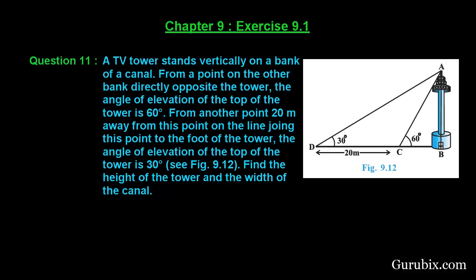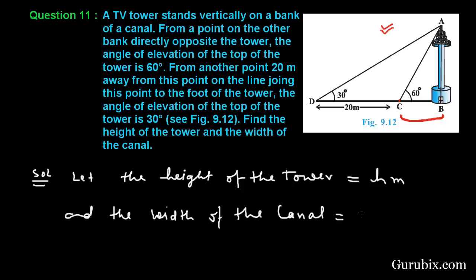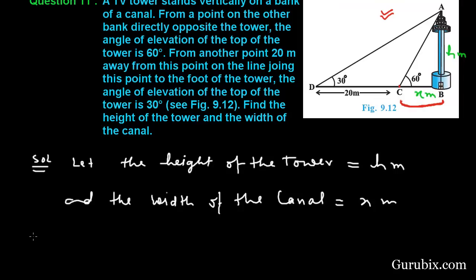This is a very important question. Let us see how to solve it. You can see this figure — here is the tower and this is the canal, so BC is the canal, and these three points B, C, and D are in the same straight line. We have to find the height of the tower and width of the canal. Let the height of the tower equal h meters and the width of the canal equal x meters.